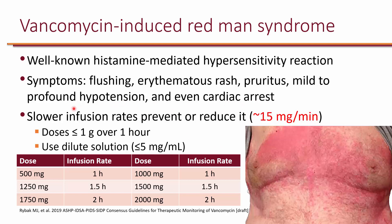Redman syndrome can be avoided if you slow the infusion rate — typically to about 15 milligrams per minute. The infusion time should be at least one hour. For 500 mg over one hour, that's about 8.3 mg/min. For 1000 mg over one hour, that's about 16.6 mg/min, which is just around 15 mg/min. Most patients will tolerate 1000 mg over one hour.